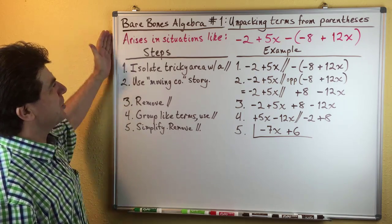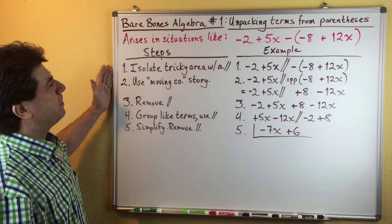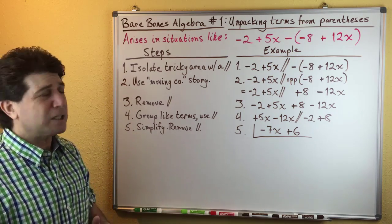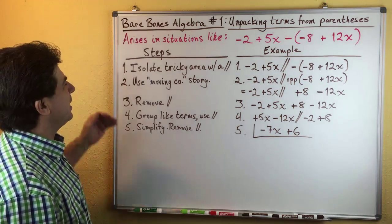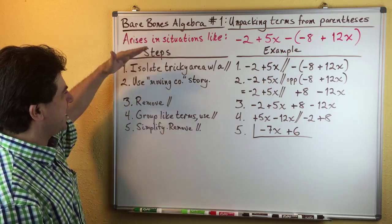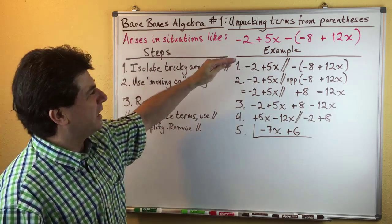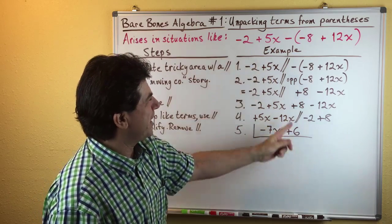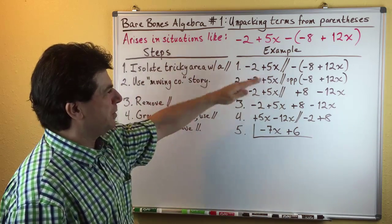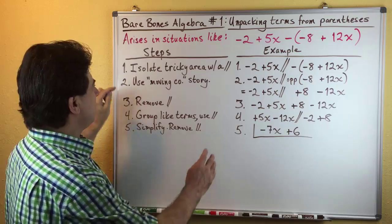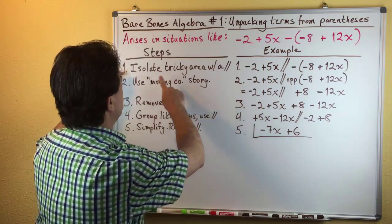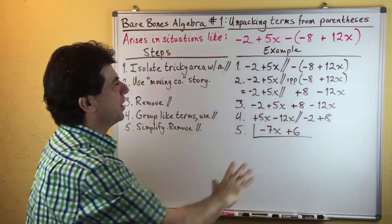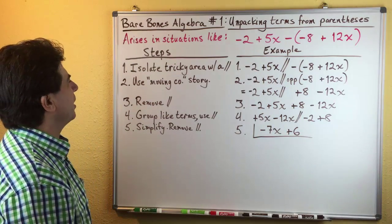In this Bare Bones Algebra playlist, I generally do the same thing as in the Algebra Survival Guide: I list the steps in English on the left side and the math steps on the right side, right next to each other, so you can correlate the explanation of each step with the actual example of what's going on in the math and clearly see what's happening.